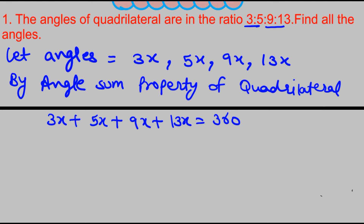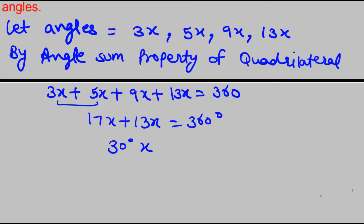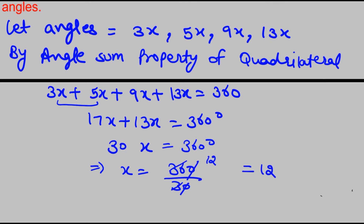Adding the coefficients: 5 + 3 = 8, 8 + 9 = 17, so 17x + 13x = 30x. Therefore 30x = 360 degrees. This implies x = 360 ÷ 30, so x = 12.